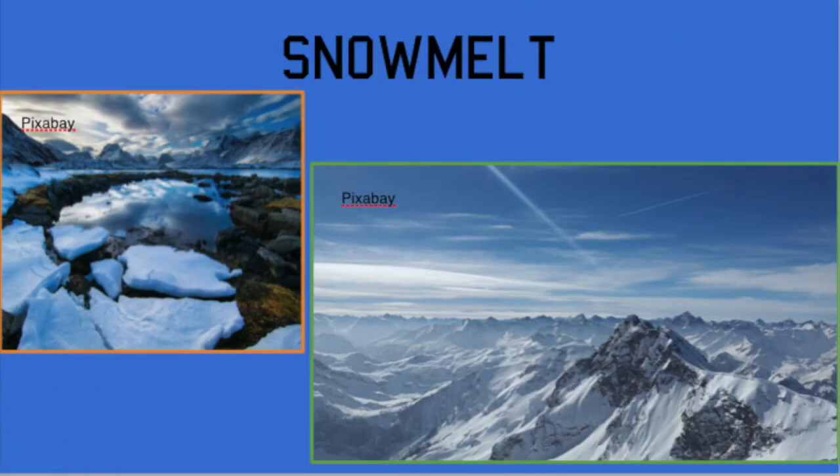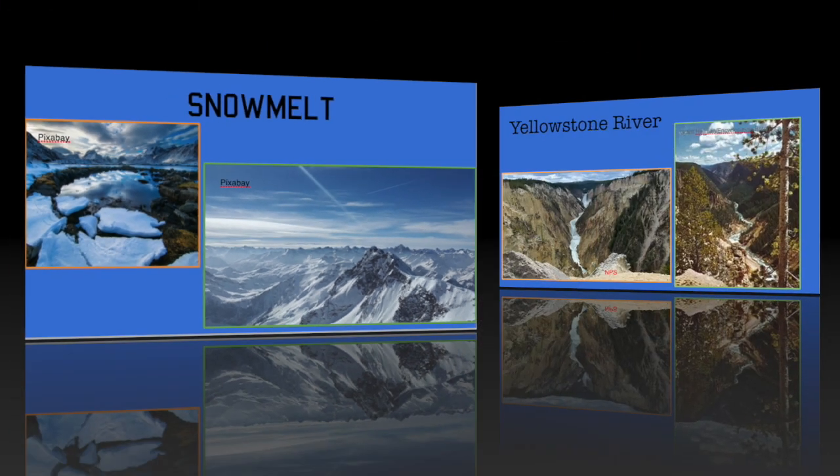Snowmelt is a major source of water for mountain streams and creeks. In areas with a large snowpack that melts during the spring and summer, the water flows into rivers that carry it through the landscape.